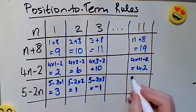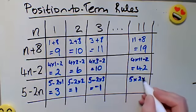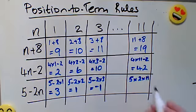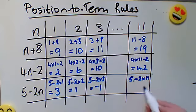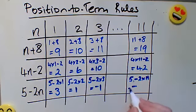If I wanted the 11th term in the sequence, that would be 5 minus 2 times 11, so 5 take away 22 is negative 17.